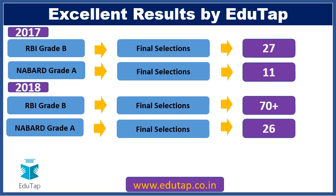Let me quickly tell you about the excellent results that we have achieved over the past few years. In 2017, in RBI Grade B we had 27 final selections from our students, and in NABARD Grade A we had 11 final selections. In 2018 we repeated the same success story — in RBI Grade B we had 70 plus final selections and in NABARD Grade A we had 26 final selections.